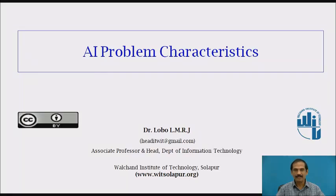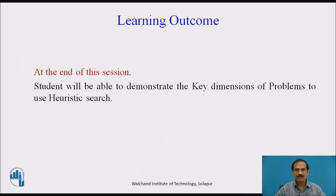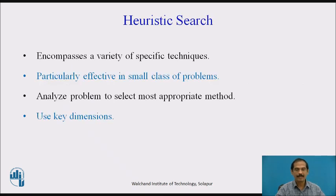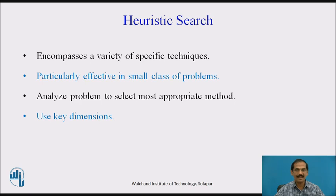Today we are going to discuss AI problem characteristics. At the end of the session, students will be able to demonstrate the key dimensions of problems to use heuristic search. Heuristics means a technique that helps make the search more efficient. A heuristic function defines a number which leads us closer to our particular goal from the start state. We analyze the problem to select the most appropriate methods and use key dimensions to define the control strategy.